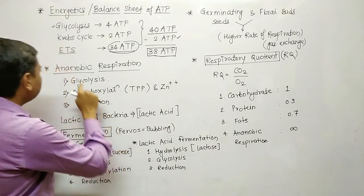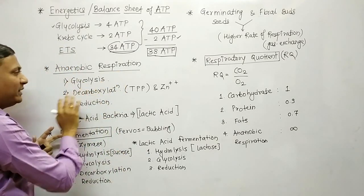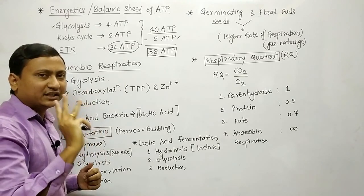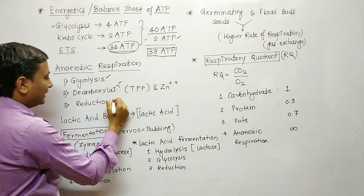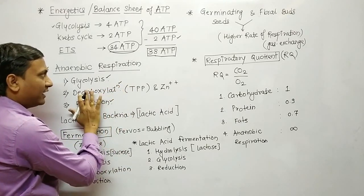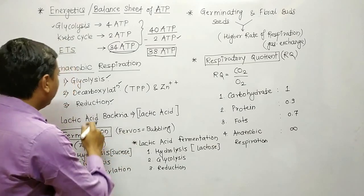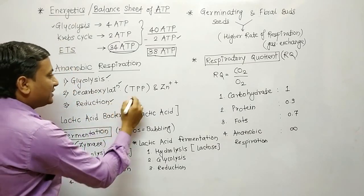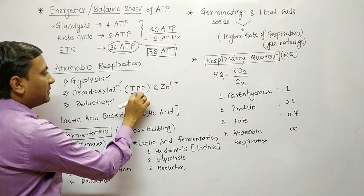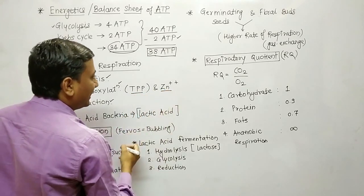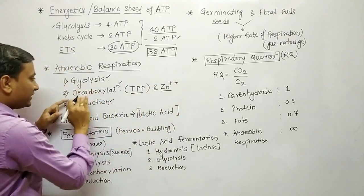Next is anaerobic respiration. Anaerobic respiration has three steps: first is glycolysis, second is decarboxylation, and third is reduction. The final end products are ethyl alcohol and CO2.